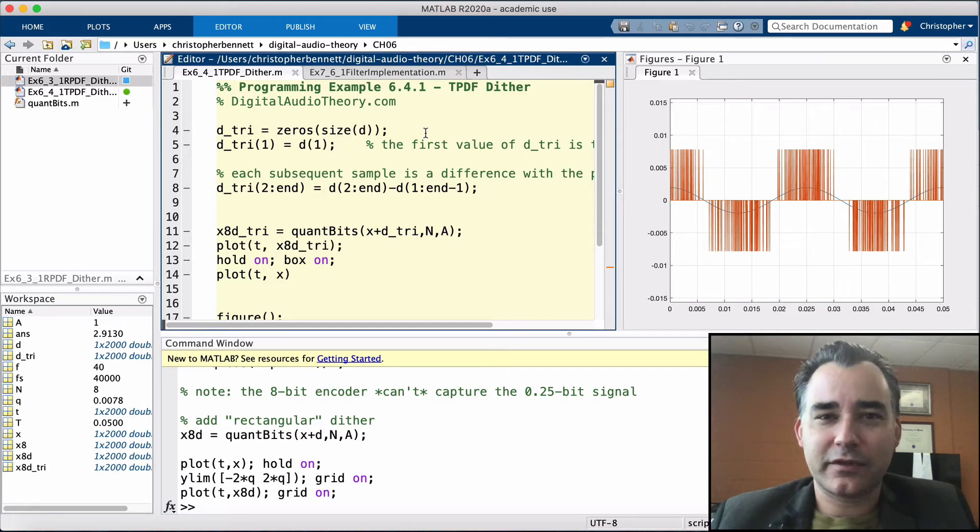This process can be imagined with a pair of dice. You know that if you roll a single die, that the probability of any given number landing up is uniform, 1 over 6. In other words, a roll of a single die exhibits an RPDF distribution.